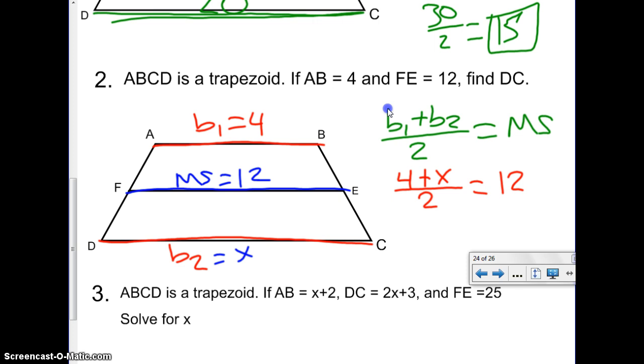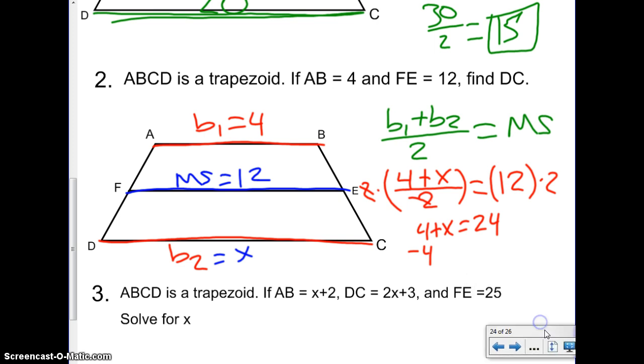We multiply both sides by the denominator. So, here we multiply by 2. And here we multiply by 2. The 2's go away. We're left with 4 plus X equals 24. And now it's super simple. Subtract by 4. Subtract by 4. And you get X equals 20.